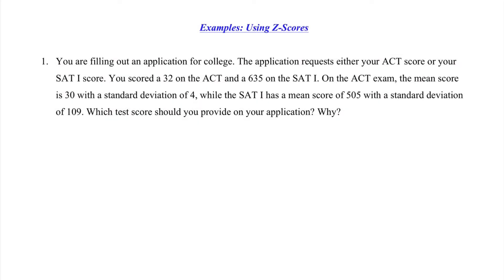Jumping into our example, we're filling out an application for college. The application requests that we use either our ACT score or our SAT-1 score. They tell us you scored a 32 on the ACT and a 635 on the SAT. On the ACT exam, the mean score is 30 with a standard deviation of 4, while the SAT has a mean score of 505 with a standard deviation of 109.